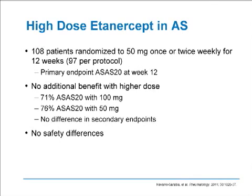Moving on, I want to talk about a couple of treatment studies published within the past year. The first is a study of high-dose etanercept in ankylosing spondylitis. There is significant literature on dosing of TNF inhibitors in rheumatoid arthritis, psoriatic arthritis, and psoriasis, and this is the first study to look at increasing the dose of etanercept in ankylosing spondylitis to see if there was any additional benefit. Much like a previously published study in rheumatoid arthritis, there was not. Indeed, 50 milligrams given twice weekly was no more effective than 50 milligrams given once weekly, although there were no safety differences between the two regimens. In the previously published rheumatoid arthritis trial, there was a suggestion of more infections in the higher-dose group.